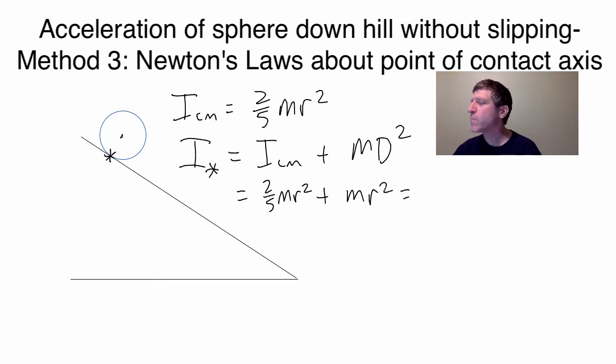...that gives us 2/5 MR squared plus 5/5 MR squared gives us 7/5 MR squared is the moment of inertia about our new rotational axis right there.